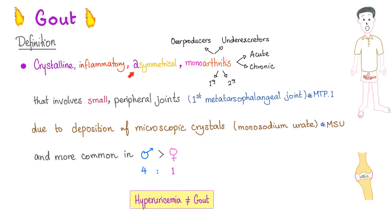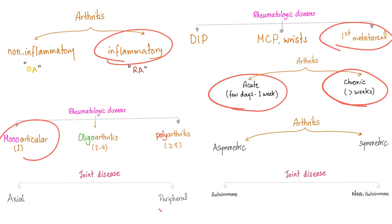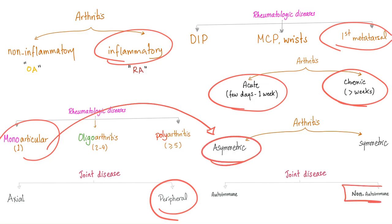Gout is a crystalline inflammatory asymmetrical monoarthritis. You could be overproducing uric acid or under-excreting uric acid. Gout can be acute or chronic, primary or secondary. It involves small peripheral joints, specifically the big toe — the first metatarsophalangeal joint — due to deposition of monosodium urate crystals. It's more common in males than females, usually monoarticular, and it is not an autoimmune disease.